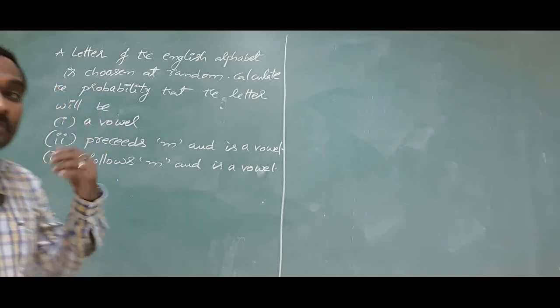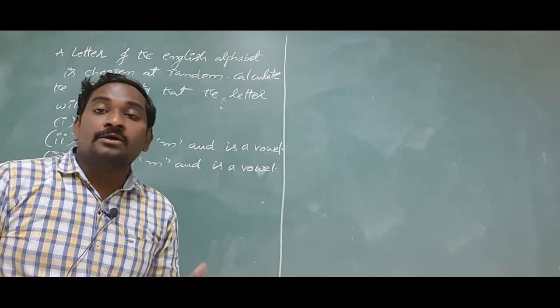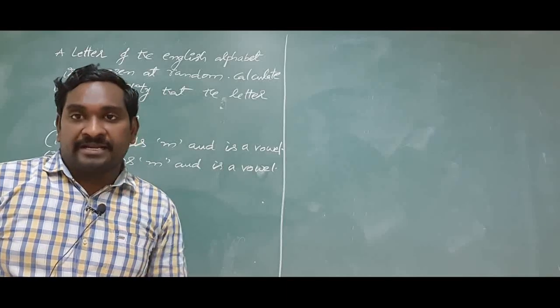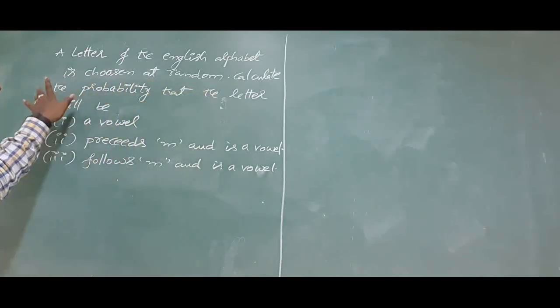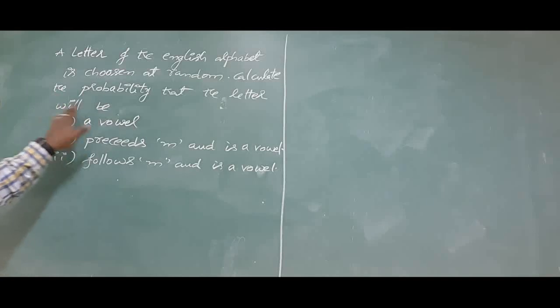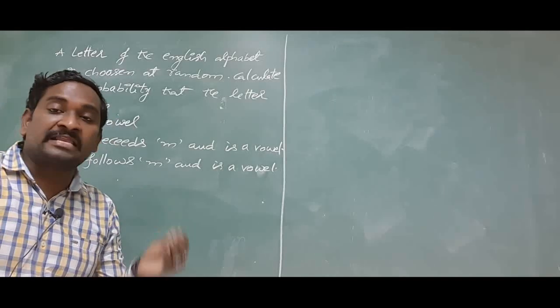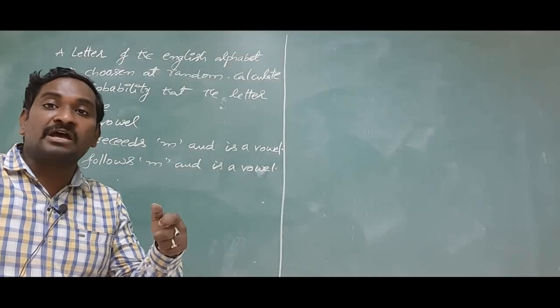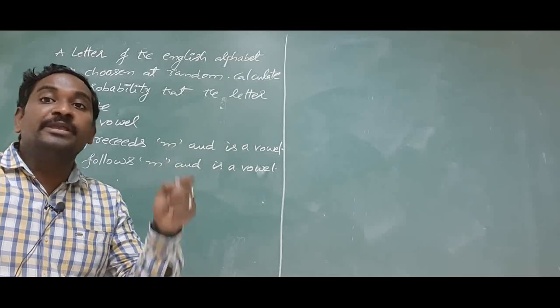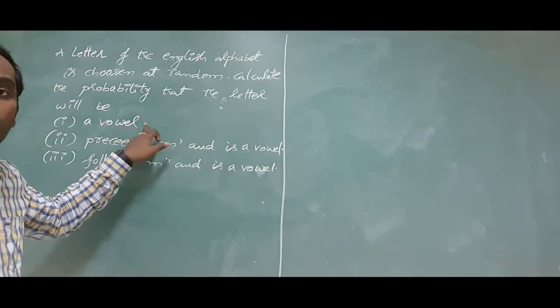Already you know that there are 26 letters in the English alphabet. So from those 26 alphabets, he selected one letter. Calculate the probability that the letter will be a vowel. If you are selecting a letter from the English alphabet, that letter should be a vowel.